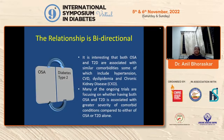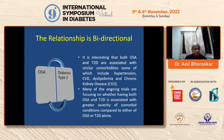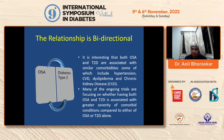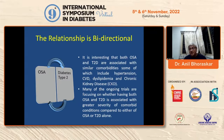You realize that there are multiple factors and therefore the relationship is bidirectional. It is interesting that both type 2 diabetes and OSA are associated with similar comorbidities, which include hypertension, cardiovascular disease, dyslipidemia, and chronic kidney disease. Many ongoing trials are focusing on whether having OSA and type 2 diabetes is associated with greater severity. Please remember, one of the commonest causes of resistant hypertension — which is non-responsive — is OSA. If OSA is treated, resistant hypertension comes under control.